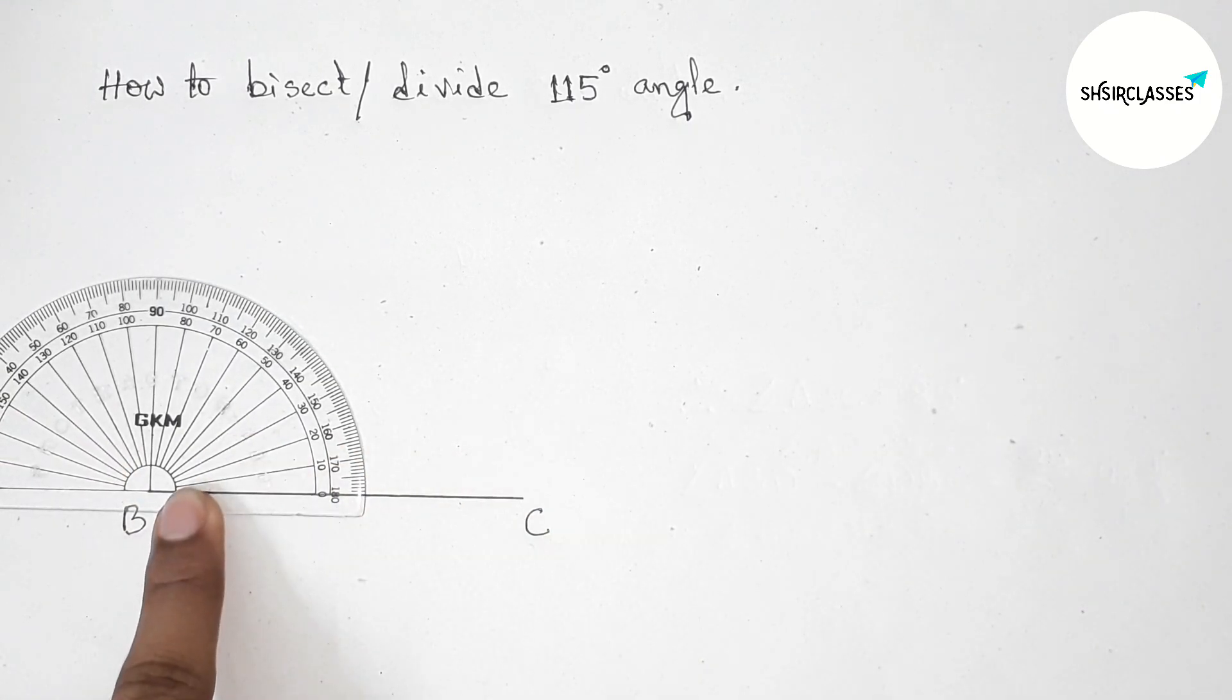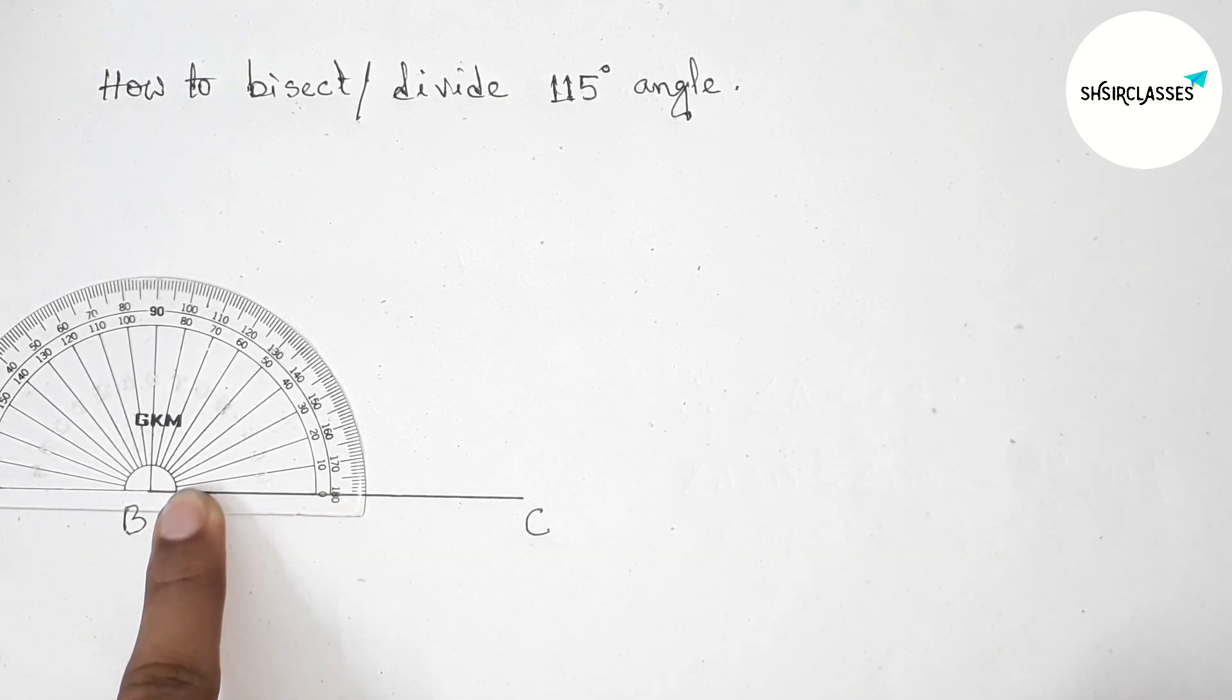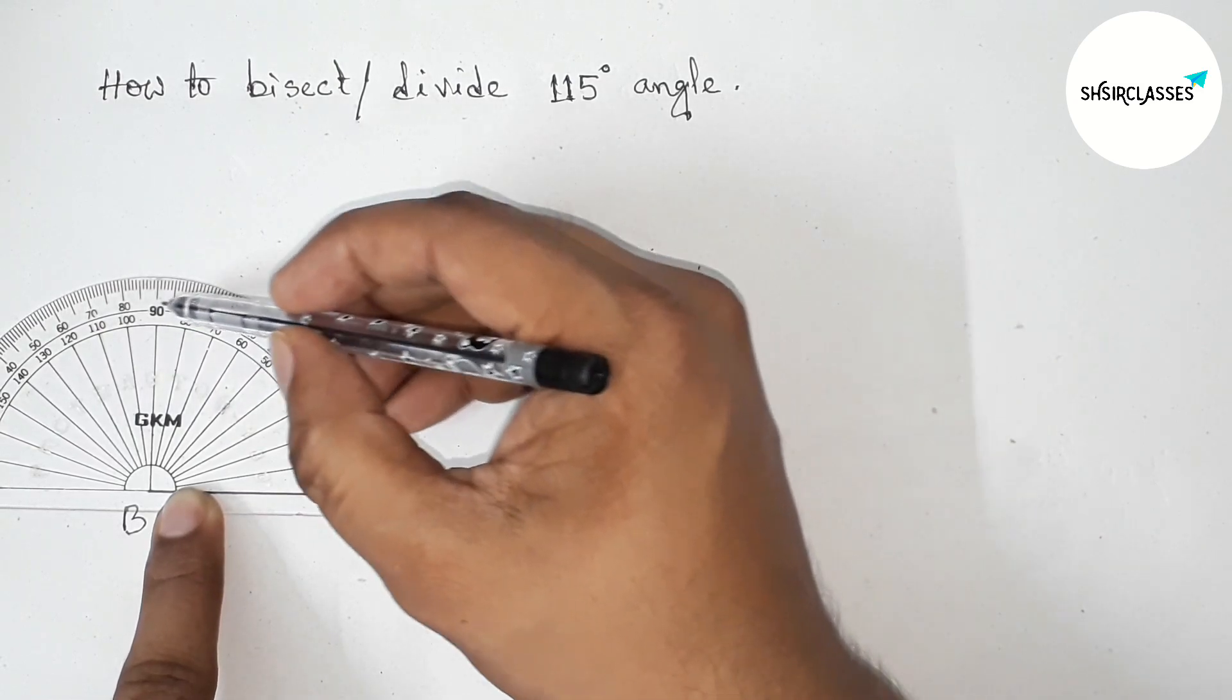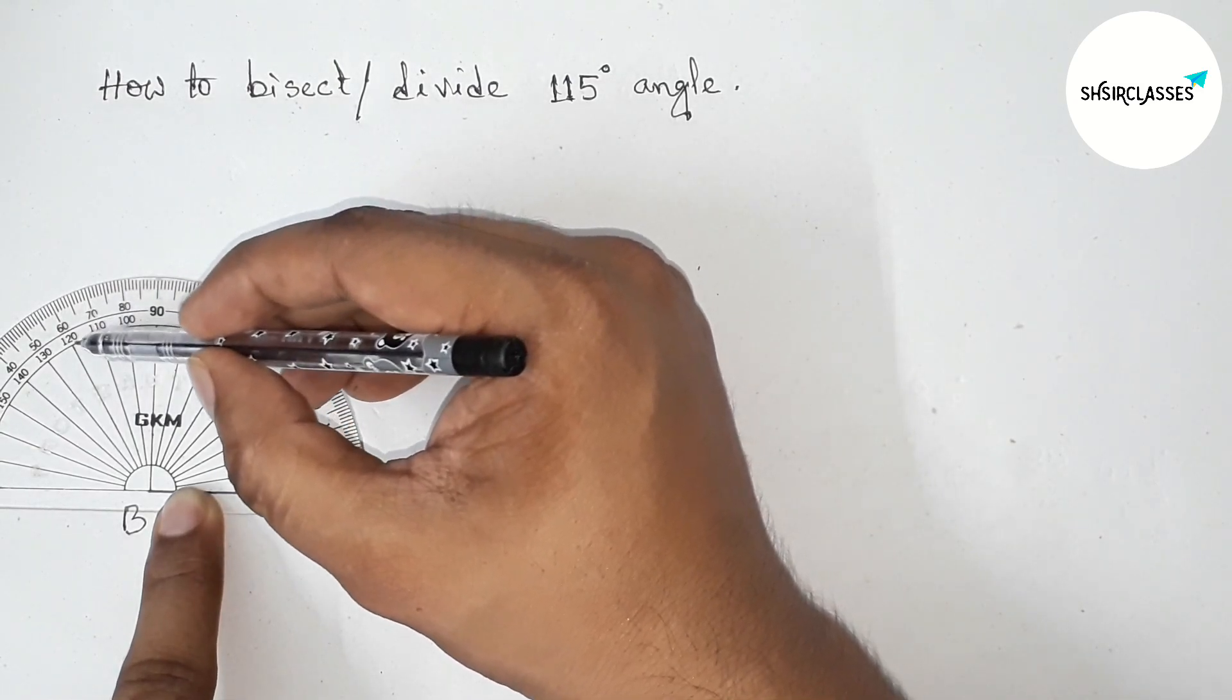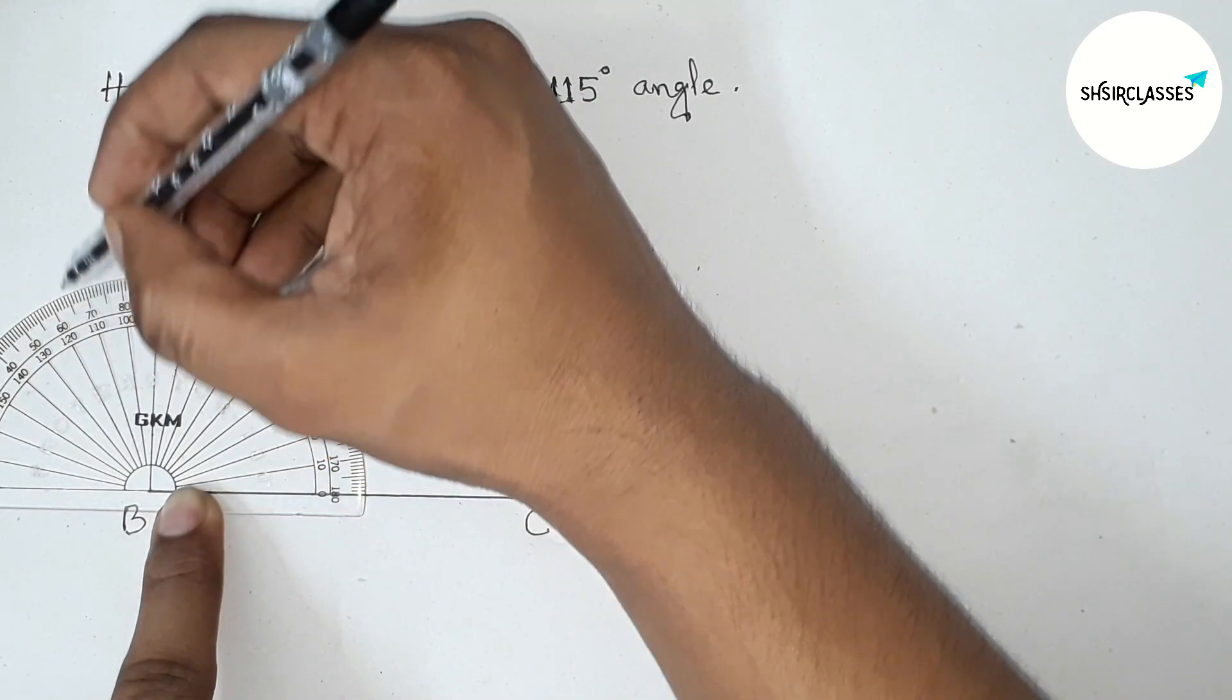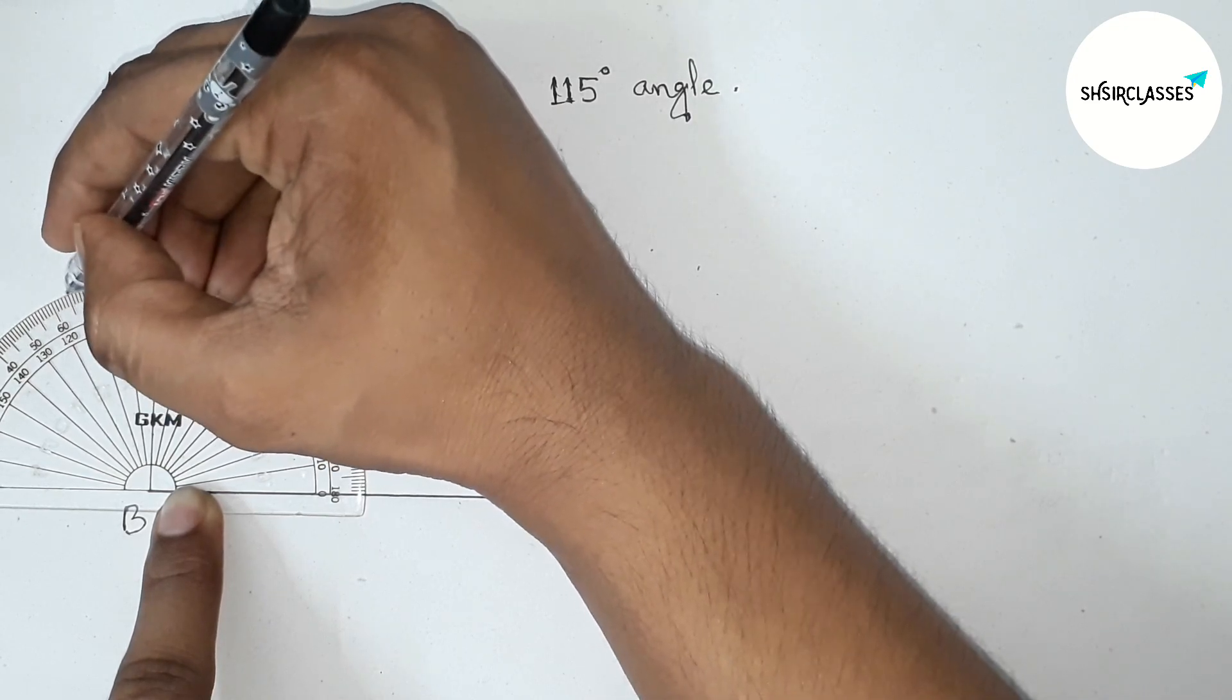Now counting 115 degrees. So here this is starting 0 then 10, 20, 30, 40, 50, 60, 70, 80, 90, 100, 110, and this is 120. So between 110 to 120 we can get 115 degrees. First marking here 115 degrees.